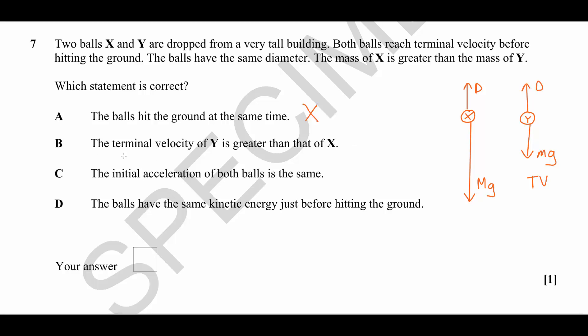Look at option B: the terminal velocity of Y is greater than that of X. Well, that's the opposite of what we've just said. The terminal velocity of X will be greater. Eventually X will reach terminal velocity, but that would be when the drag is much higher. It'll be up here somewhere, by which time it's already traveling much faster than ball Y.